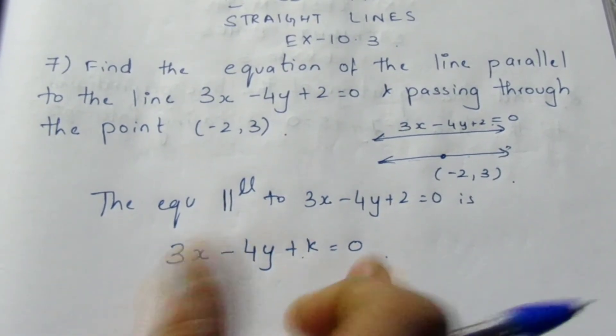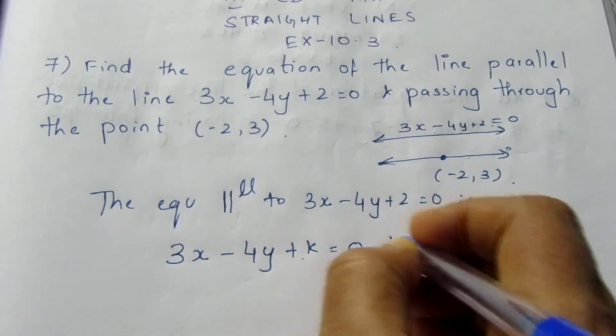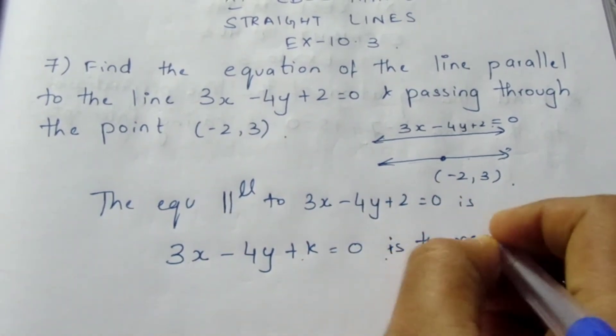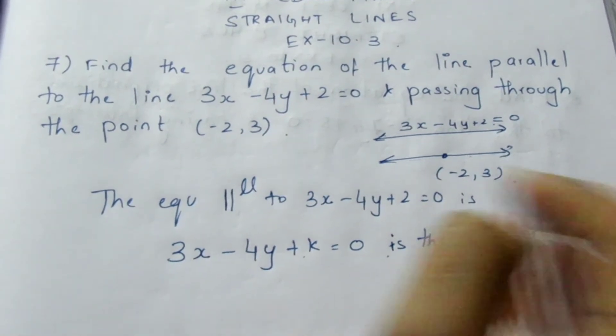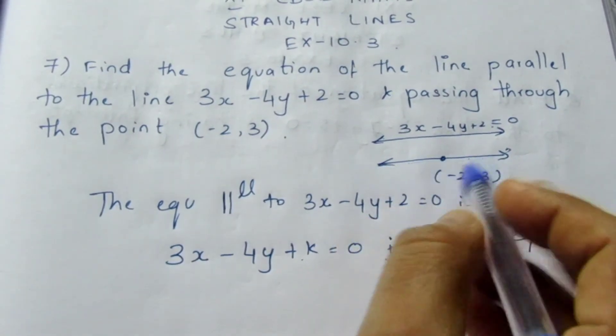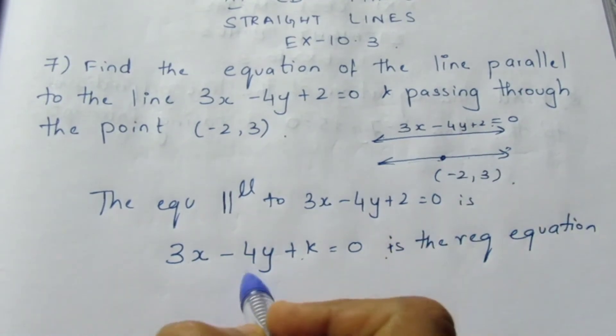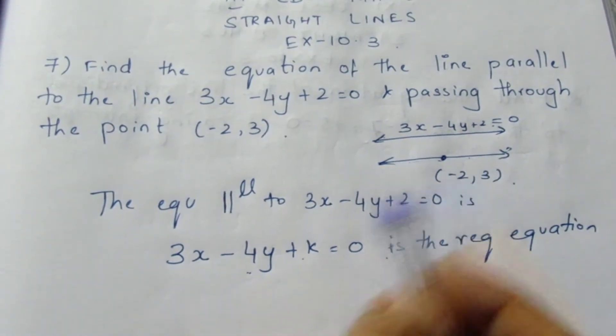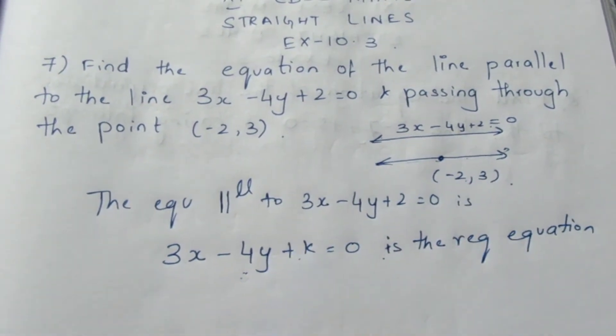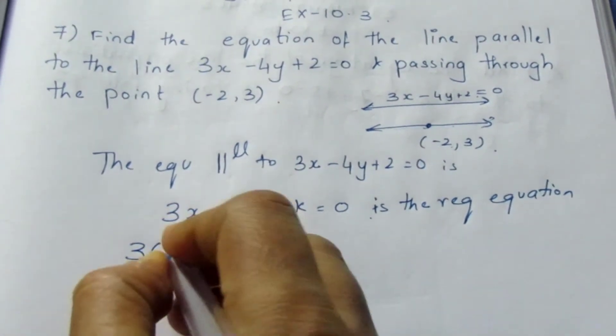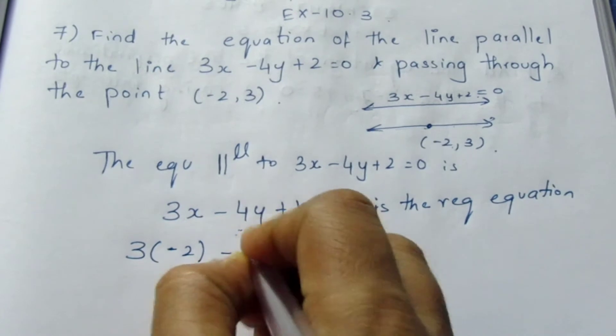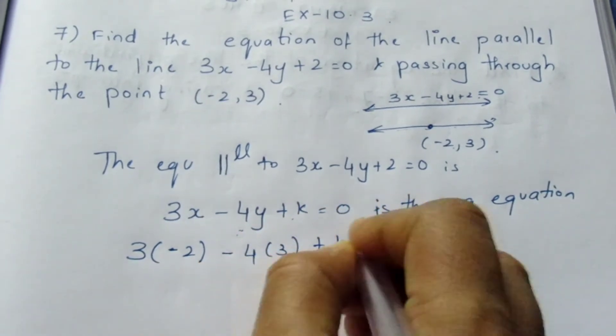Now this is the required equation. And we know that this point passes through it. That means we can substitute the x and y values. Here 3 into (-2) minus 4 into 3 plus k equal to 0.